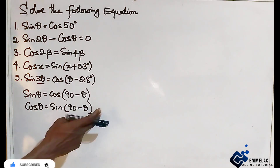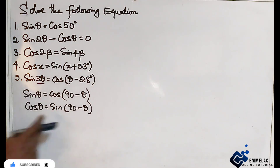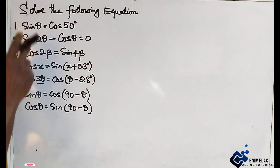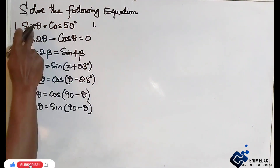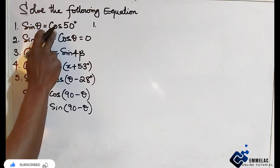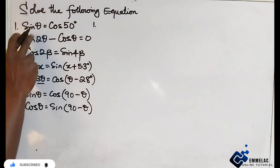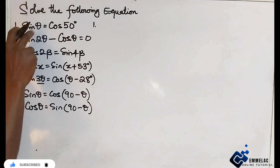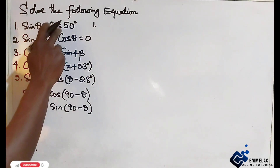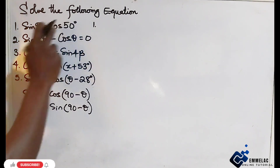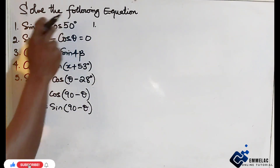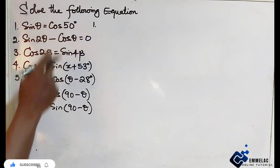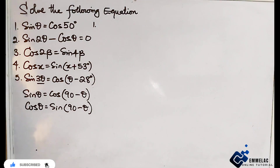Now let us use these equations to solve each problem. For number one, we have sine theta equals cos 50. What angle of sine will give us cos 50? The sine of a particular angle should be equal to cos 50 degrees.